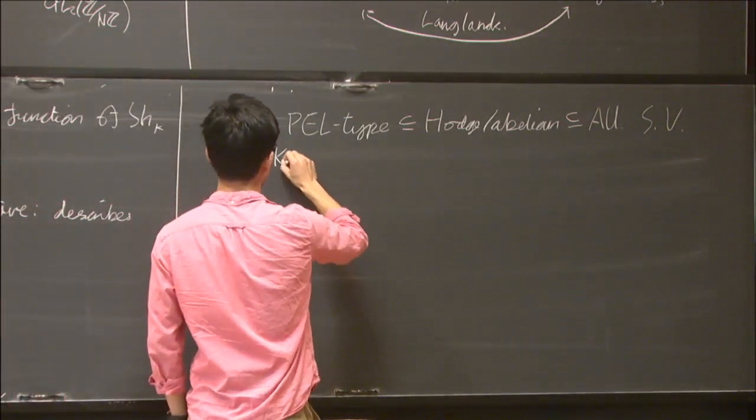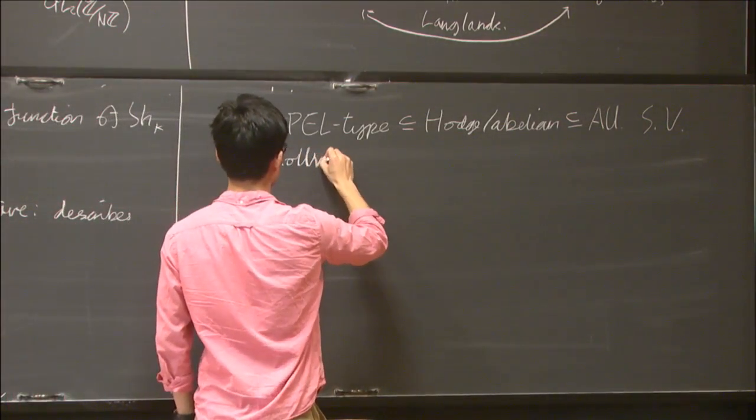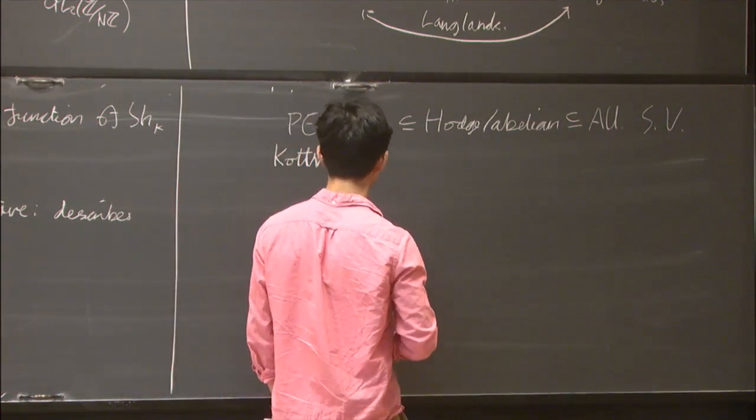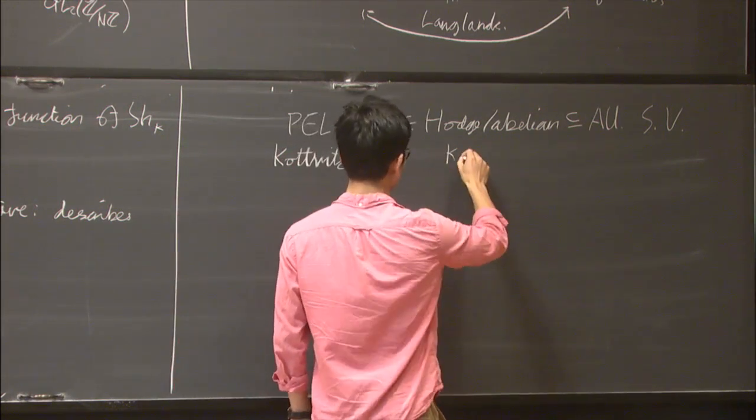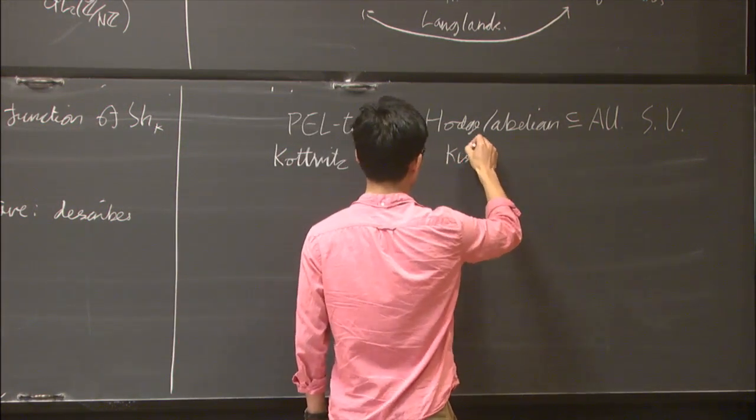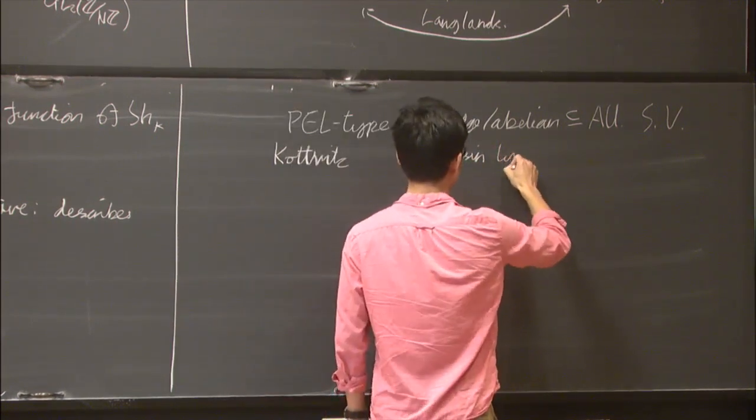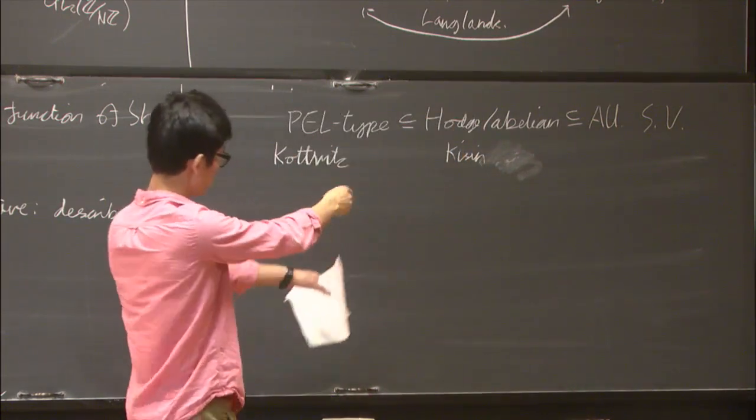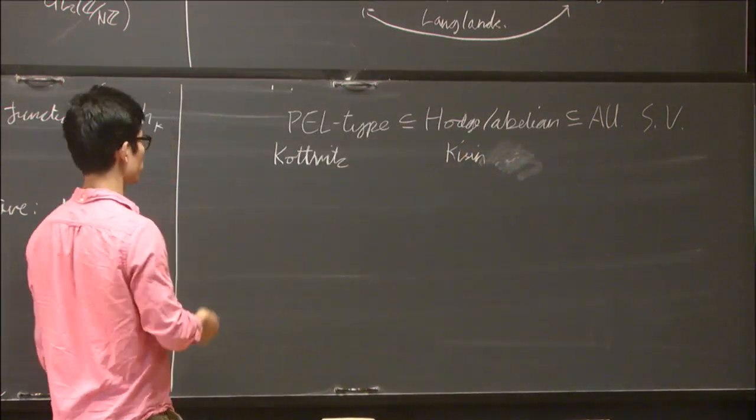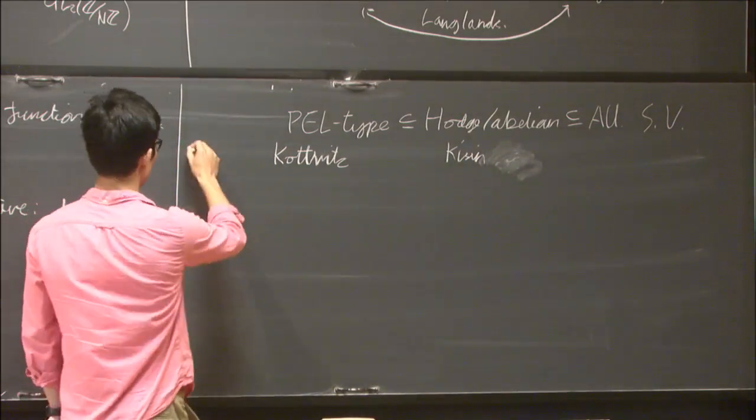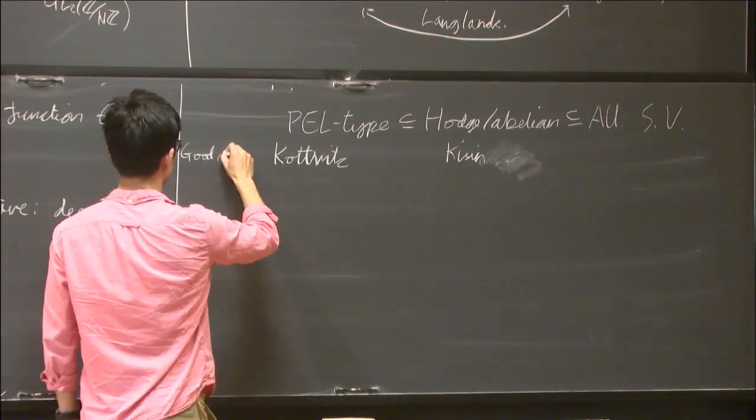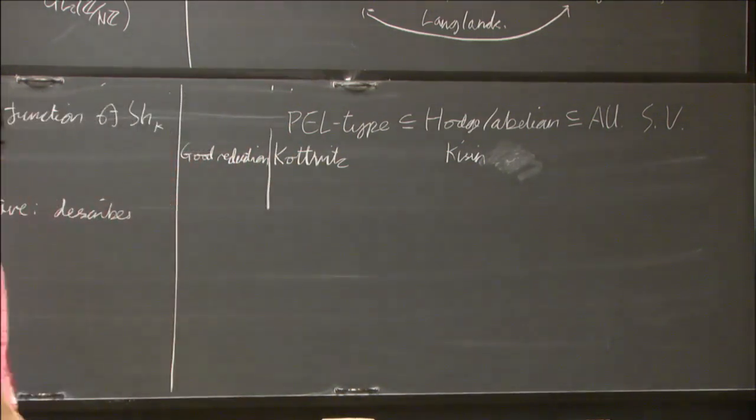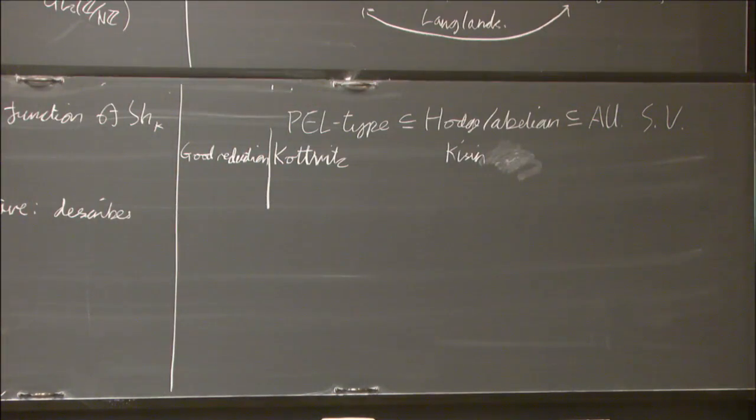In terms of this conjecture, I think the first major breakthrough was done by Kottwitz. And recently Kisin constructed integral models for Hodge slash abelian type Shimura varieties and proved the conjecture for these models. But in both these cases the authors considered what's called good reduction of Shimura varieties. This is when this integral model is smooth over this arithmetic ring.